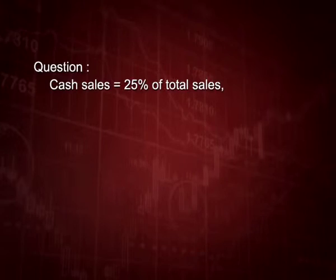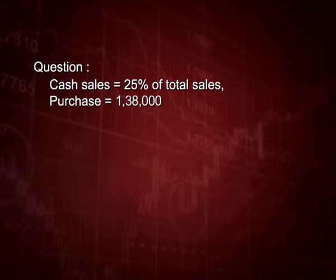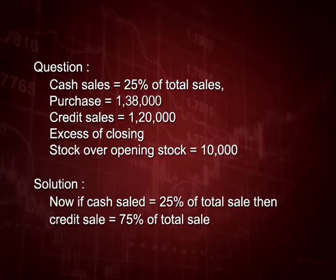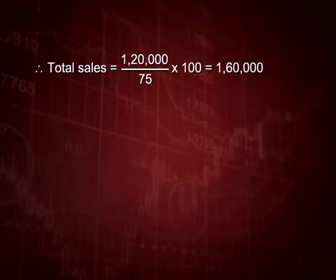Another variation of the GP ratio: cash sales are 25 percent of total sales, purchases are 1 lakh 38 thousand, credit sales are 1 lakh 20 thousand, and the excess of closing stock over opening stock is 10 thousand. Since cash sales are 25 percent of total sales, credit sales are 75 percent. Using the unitary method, 1 lakh 20 thousand divided by 75, multiplied by 100, gives total sales of 1 lakh 60 thousand.